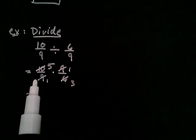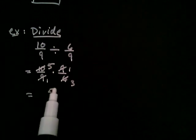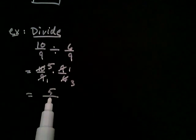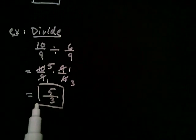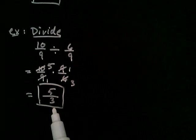Now once I've done all my cancellation, I simply multiply across. Five times one is five, and one times three is three. So I end up getting five thirds. And so we're going to leave our answer as an improper fraction. That is, with the numerator larger than the denominator.